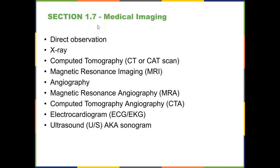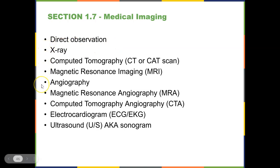Section 1.7: Medical Imaging. We have several techniques we can use to see the outside of the body externally or inside the body internally. Most of these are non-invasive, meaning we don't need to put a tube in you. Some can be invasive depending on the circumstances. We're going to look at direct observation, x-rays, CAT scans, MRIs, angiography (which can be applied to MRIs and CAT scans), EKGs or ECGs, and ultrasounds or sonograms.